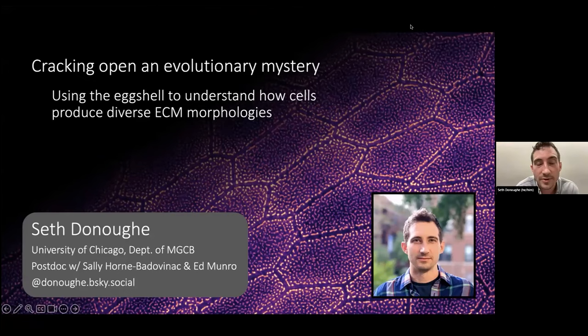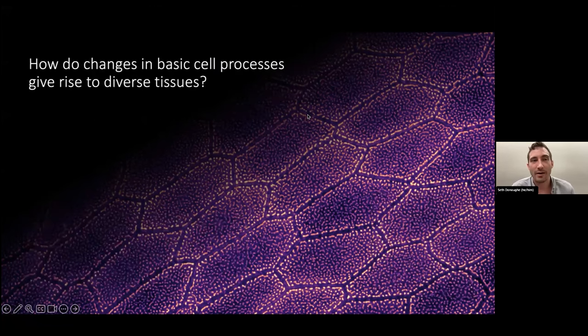I'm Seth. Thank you all for being here, thank you to Cassandra for hosting, and thank you to Development for giving us all a chance to share this stuff. We all know that there are lots of diverse tissues in nature. My big question that really gets me excited is trying to figure out how do changes in basic cell processes give rise to those diverse tissues?